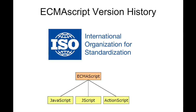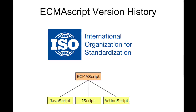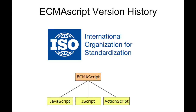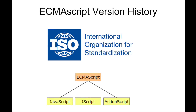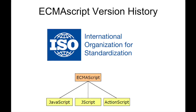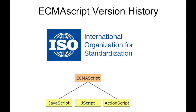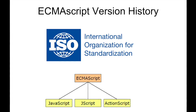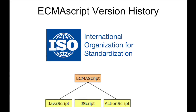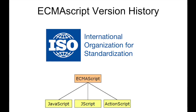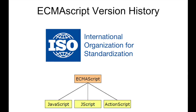In 2011, edition 5.1 was released, which is the third edition of the international standard ISO. In June of 2015, the sixth edition, initially known as ECMAScript 6, was introduced. Also in June of 2016, the seventh edition was released, and it is intended that the language continues to evolve.